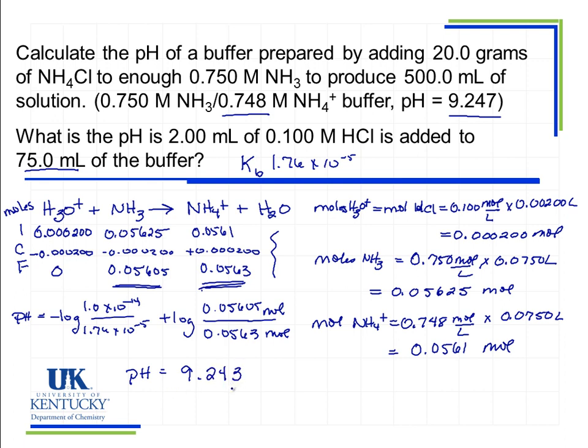Looking at this pH of 9.243, we see it's slightly lower than the original buffer pH. It's resisting change—not completely unchanged, but resisting it ever so slightly. It is going down, which is expected because you're adding an acid to the solution, so the pH should be a little bit lower.